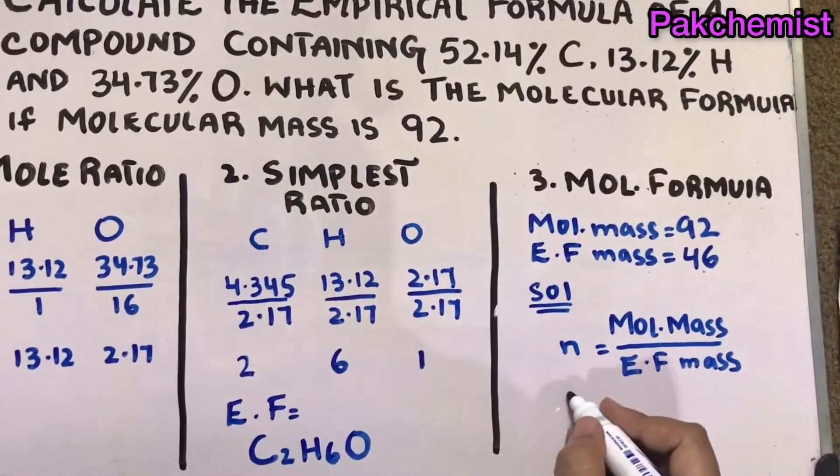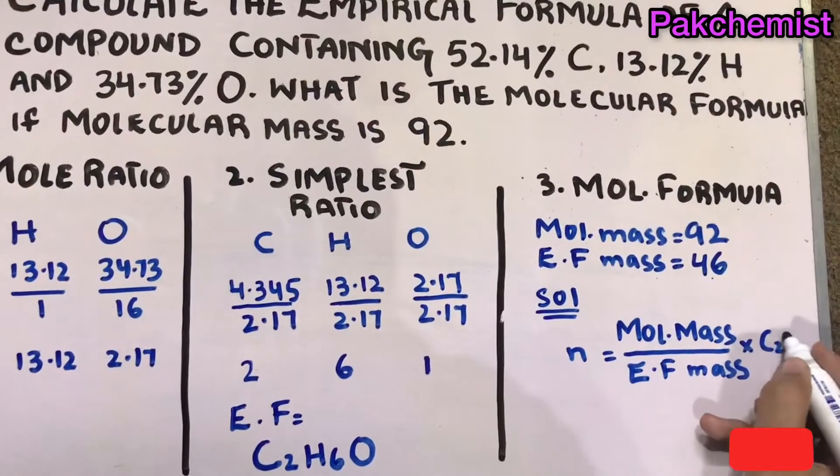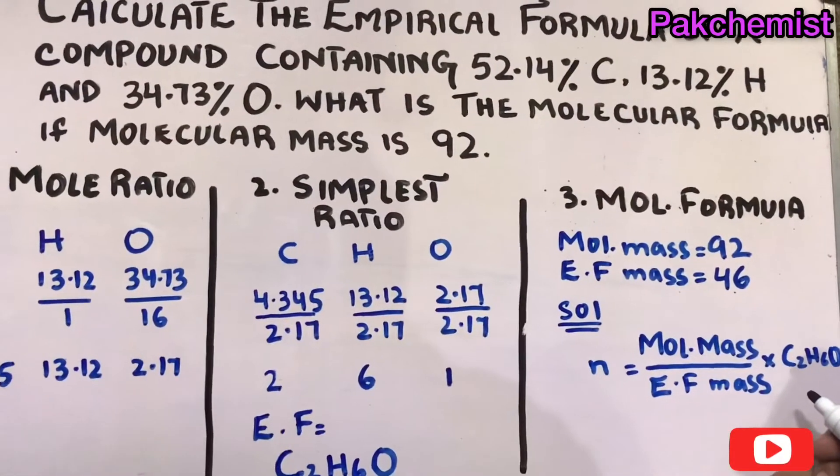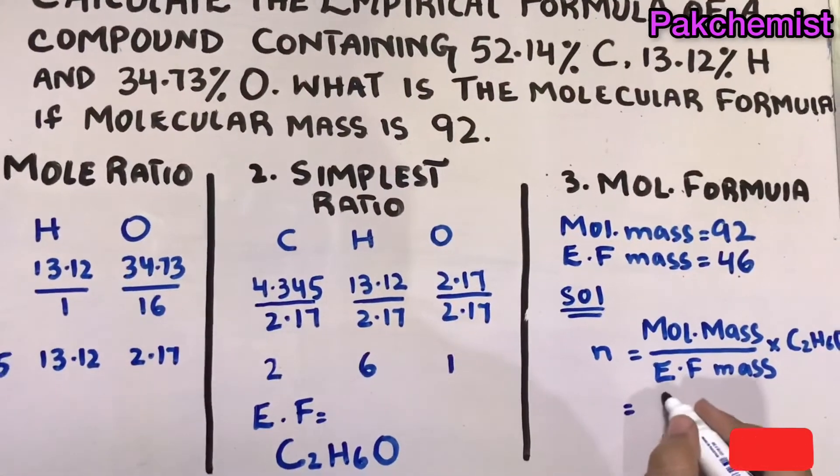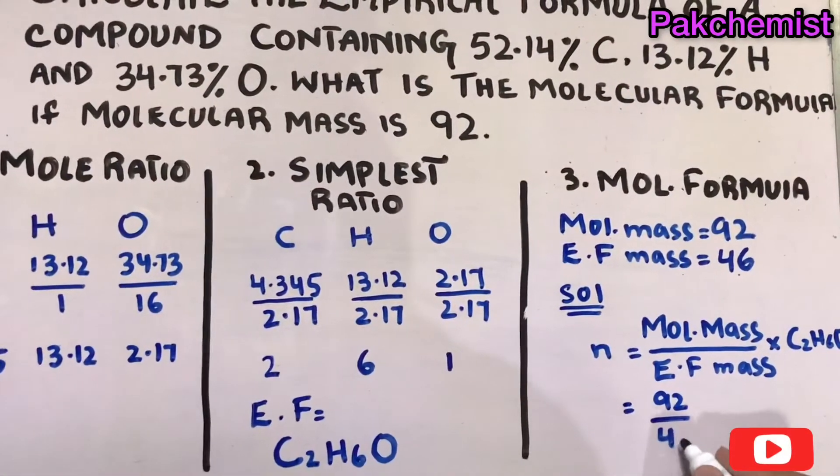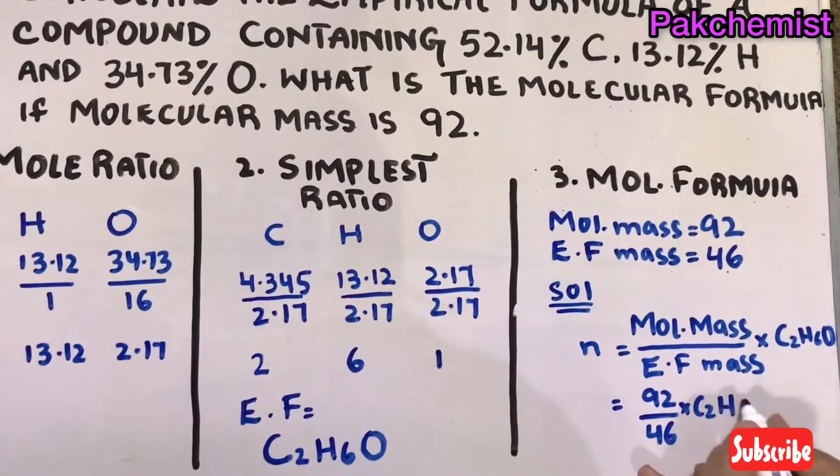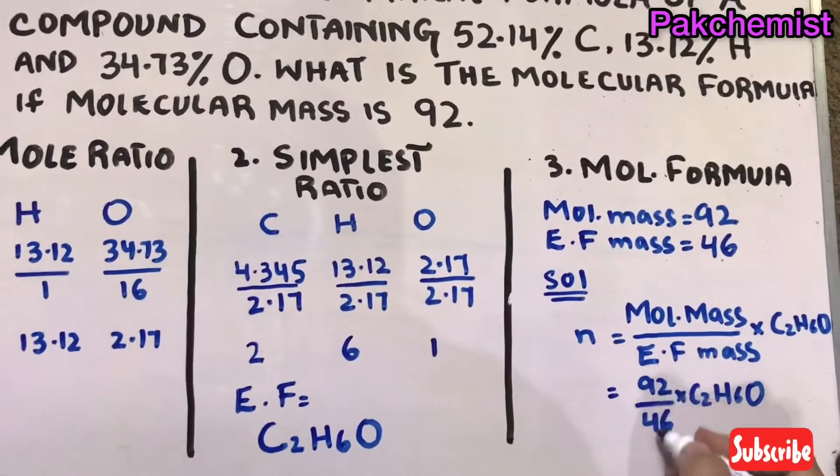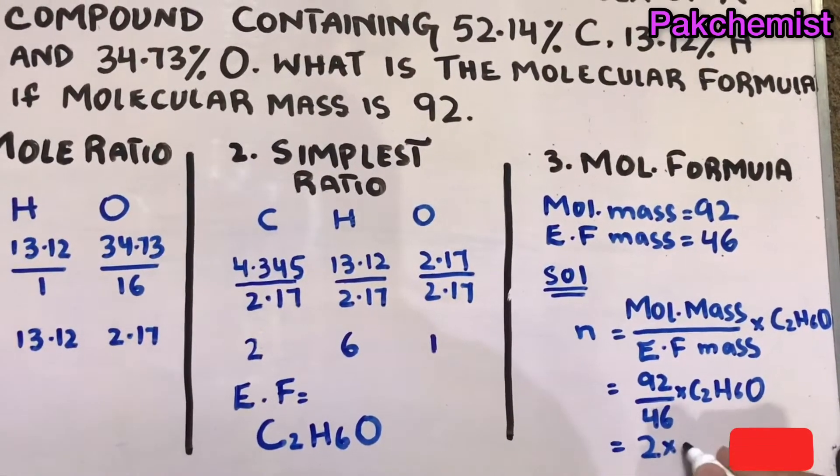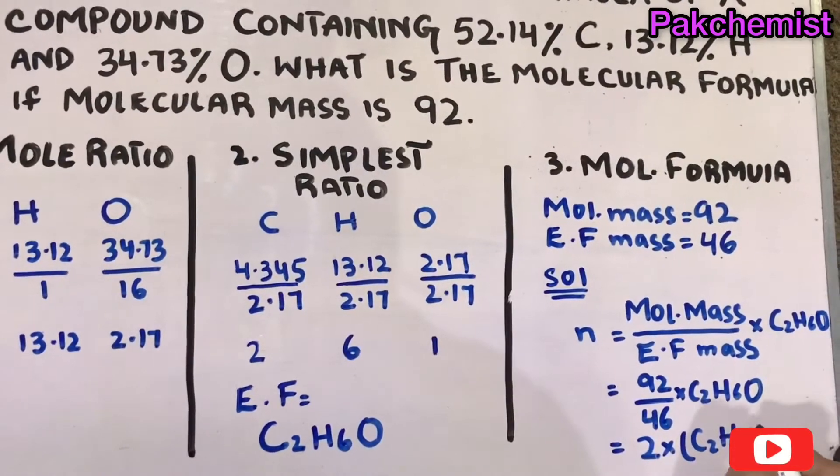Write the formula C2H6O here, empirical formula here. 92 divided by 46, multiply by C2H6O. After dividing you will get 2, and you have to multiply this 2 with the empirical formula.